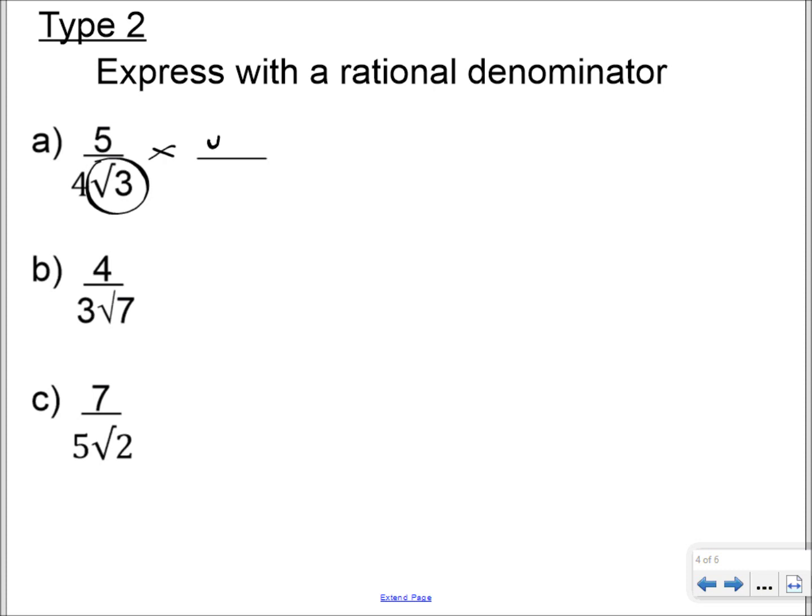And so, we multiply by root 3 over root 3, and that gives us 5 root 3 as our numerator, and our denominator, because root 3 times root 3 is 3, 4 times 3 is 12, and that's as done. And we can't simplify 5 over 12, so that's our final answer.